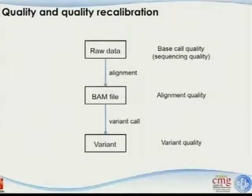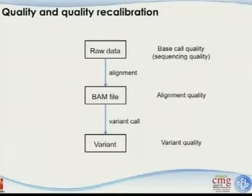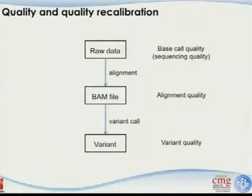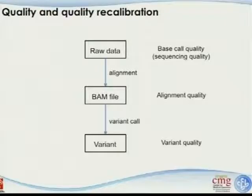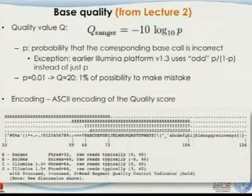Next topic: quality recalibration. From raw data to alignment into the BAM file of aligned reads, and then to variation calculation. For the raw data part, remember there are three levels of quality: base quality, mapping quality, and variant quality. The quality that the sequencer reports — sometimes we just take it for granted. If we get an Illumina sequencer and it tells us this base is G and the p-value is 0.0001, that's pretty good. But do we really believe it?